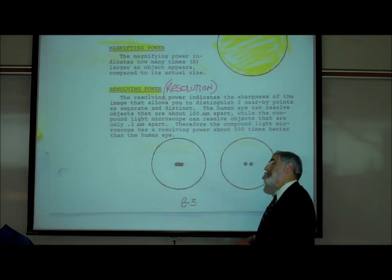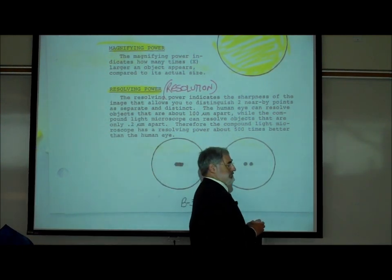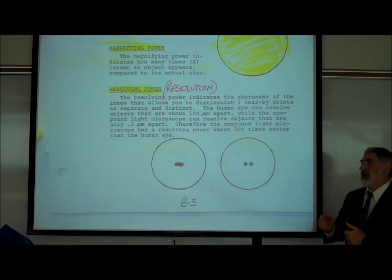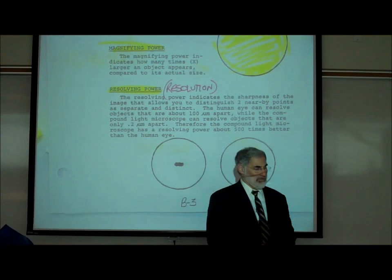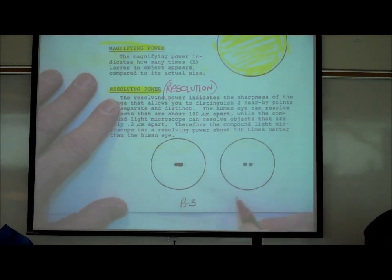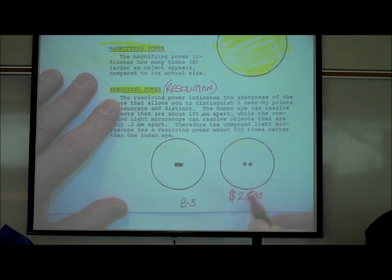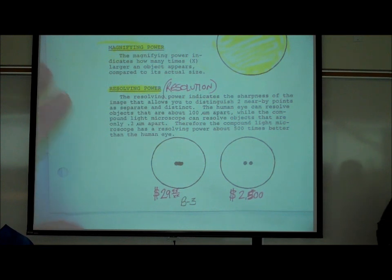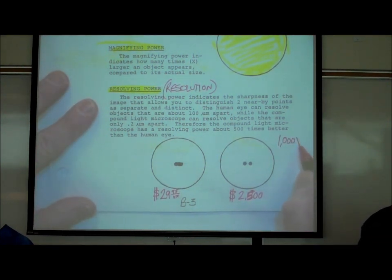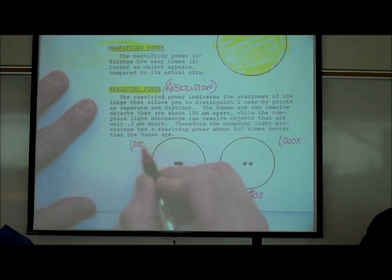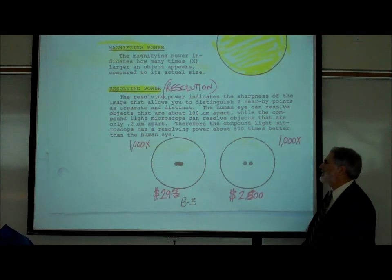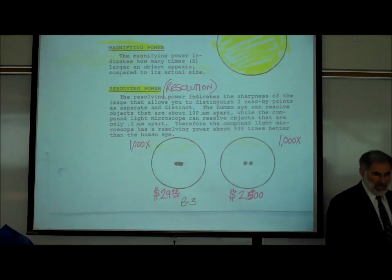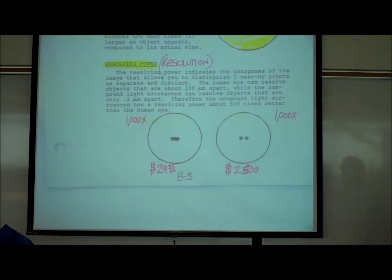Imagine you were buying a microscope. There are two for sale: one at $2,500 and one at $29.95. Let's say they both magnify a maximum of 1,000 times — both have a magnifying power of 1,000x, meaning they make whatever you're looking at appear 1,000 times bigger than it really is.